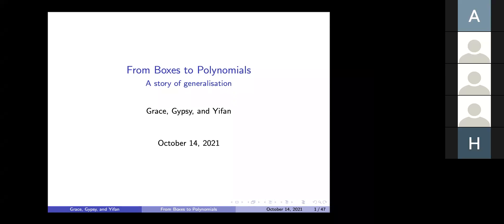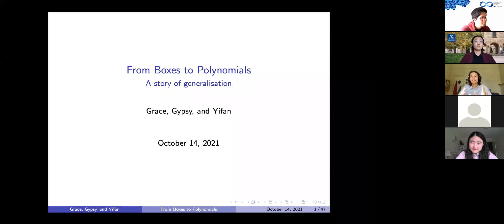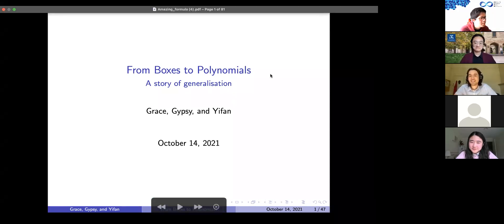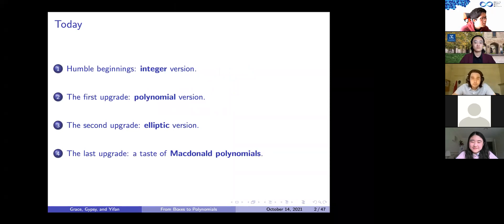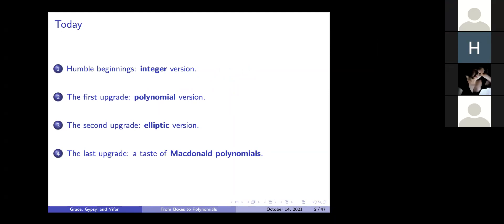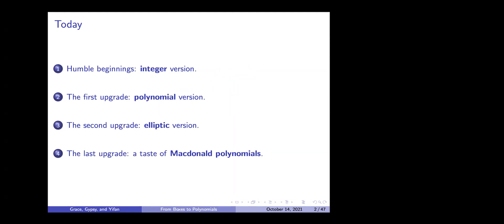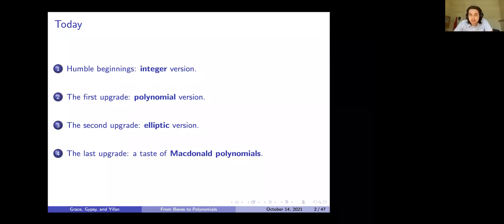Keep that theme in mind. We're going to start with something quite small and specific, and then end up with something almost unrecognizable from the beginning. The plan for today: we'll start with humble beginnings with the integer version, upgrade once to the polynomial version, then to the elliptic version, and finally see how this fits within the field of Macdonald polynomials.